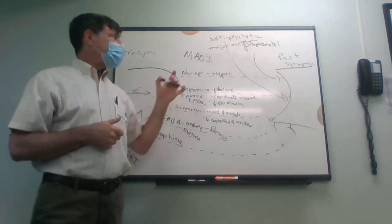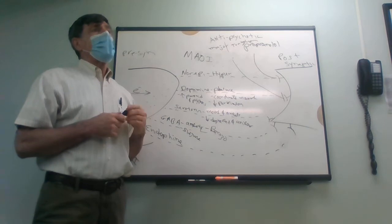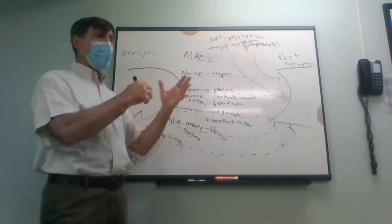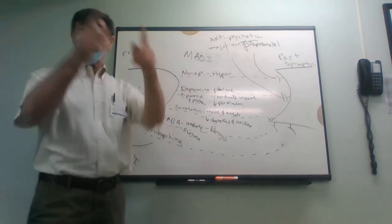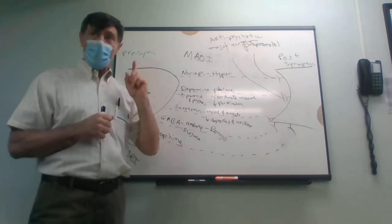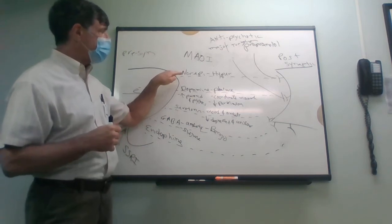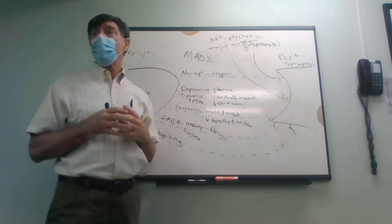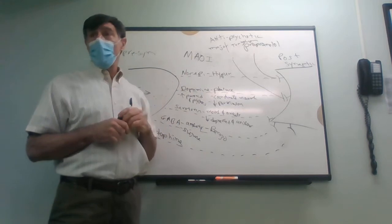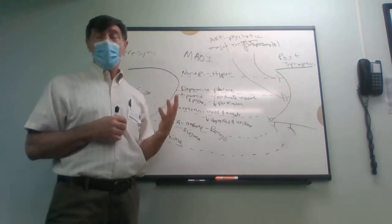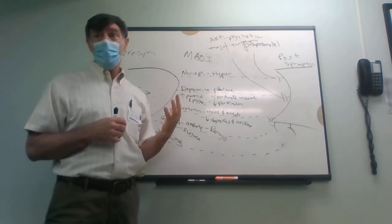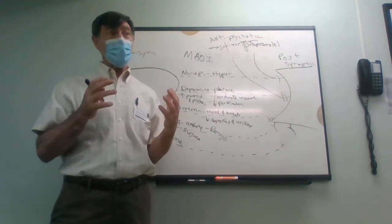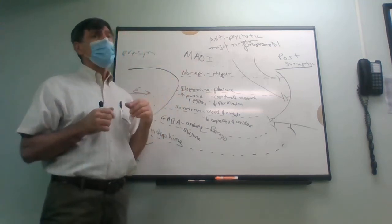MAOIs were the first discovered antidepressants. Doctors put people on MAO inhibitors like Nardil for tuberculosis because of their antimicrobial properties, and noticed not only was the TB going away — the patient was in a better mood. But there's one problem: if you don't break down norepinephrine and dopamine, your blood pressure goes up. You can have a hypertensive crisis.